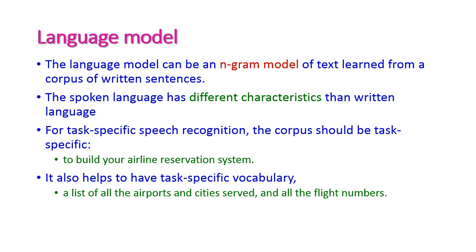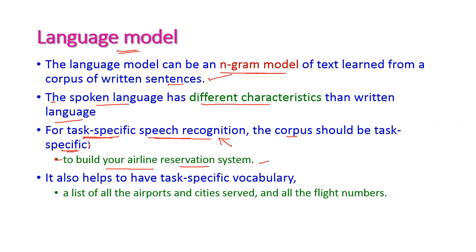The language model can be an n-gram model that learns from written sentences. Spoken language has different characteristics compared to written language and can sometimes be completely different. For a task-specific speech recognition system, the corpus should be task-specific — all written sentences should relate specifically to a particular application. For example, to build an airline reservation system, the task-specific vocabulary should include all airport names, city names, flight numbers, and related information.